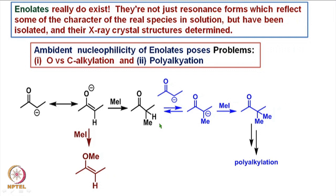In addition to this, we also have a possibility of polyalkylation. This particular ketone can undergo deprotonation by base or by the carbanion present in the reaction medium to make another carbanion, which can then react with methyl iodide to form a dimethylated compound. This dimethylated compound in principle has three more hydrogens alpha to the carbonyl group, which can be deprotonated and undergo further alkylation to lead to polyalkylation.